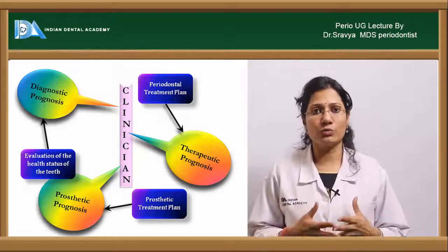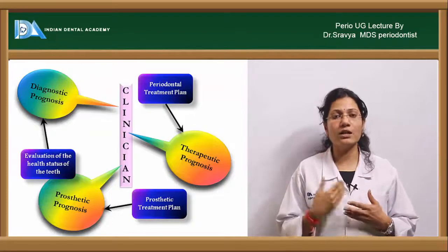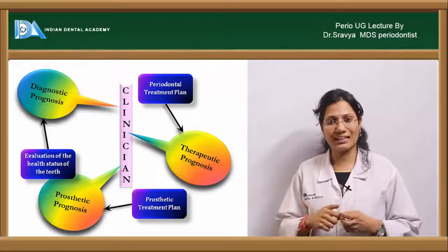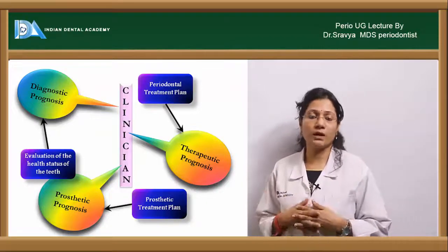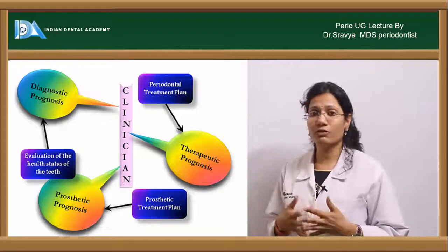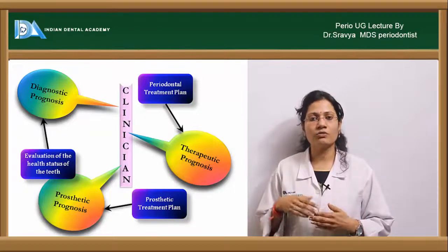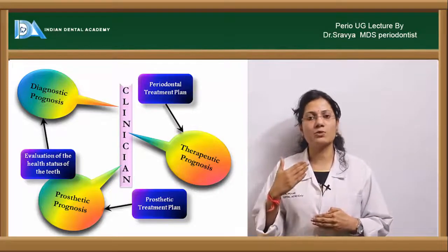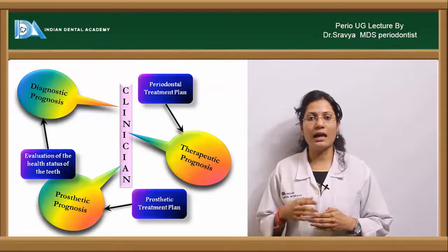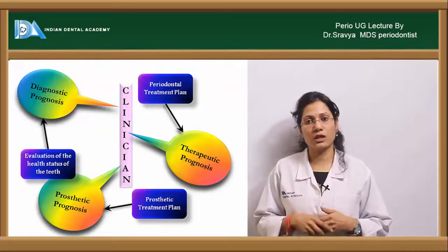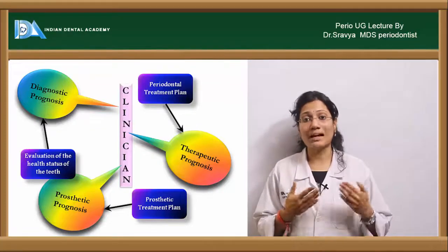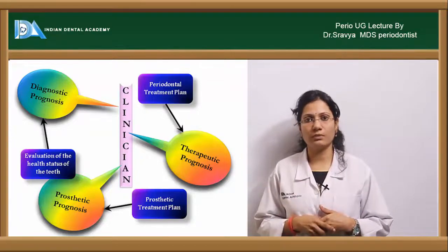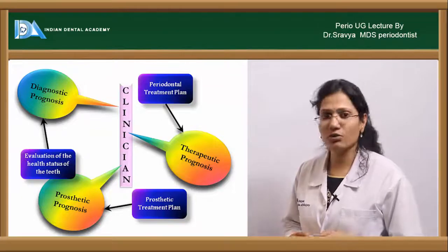You are confused whether to save the tooth because it is an anterior tooth with grade 2 mobility and a lot of bone loss, or whether to extract the tooth and consider an implant. In those situations, you perform the first phase of treatment — phase 1 therapy — then wait for a period of time and re-evaluate the status of that tooth. Probably the prognosis might be better, some regeneration could happen, or probably it can worsen. Then you can decide what your treatment plan would be.